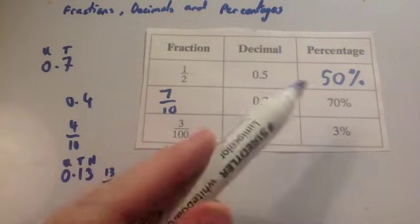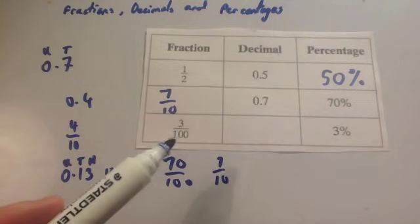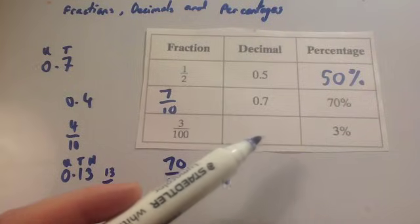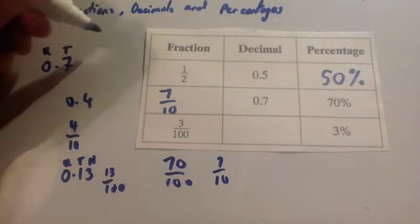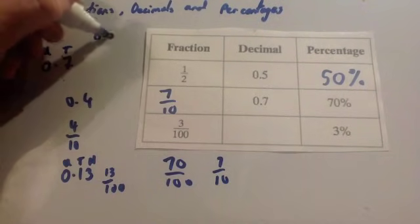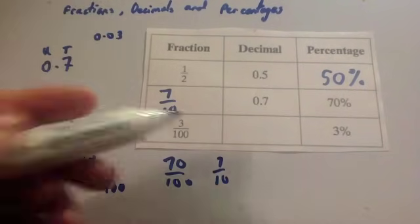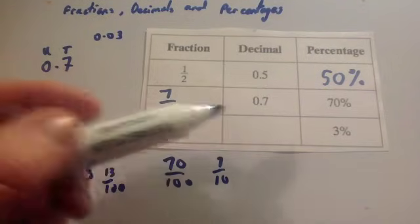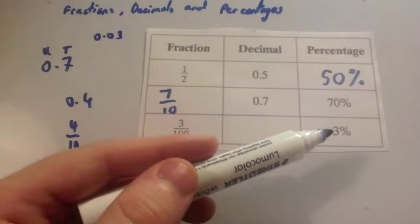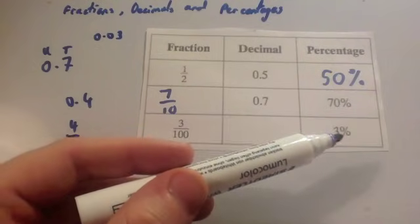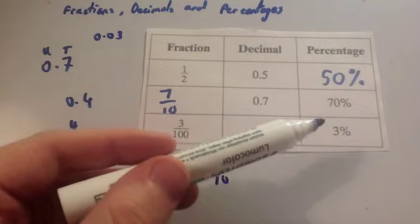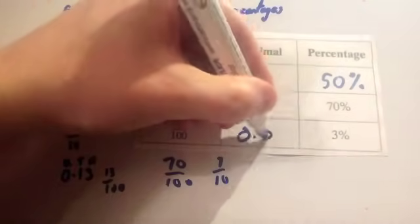Okay, the next one, you've been asked to write 3 hundredths, or 3% as a decimal. So you can look at either one of these. You could go to your 3 hundredths and think, well, 3 hundredths, so that would have no units, no tenths, and 3 hundredths. And then your answer would be 0.03. The way I would personally look at it is to come from a percentage to a decimal, you divide by 100. So you'd move the decimal place twice, so 0.3, 0.03. So the answer is 0.03.